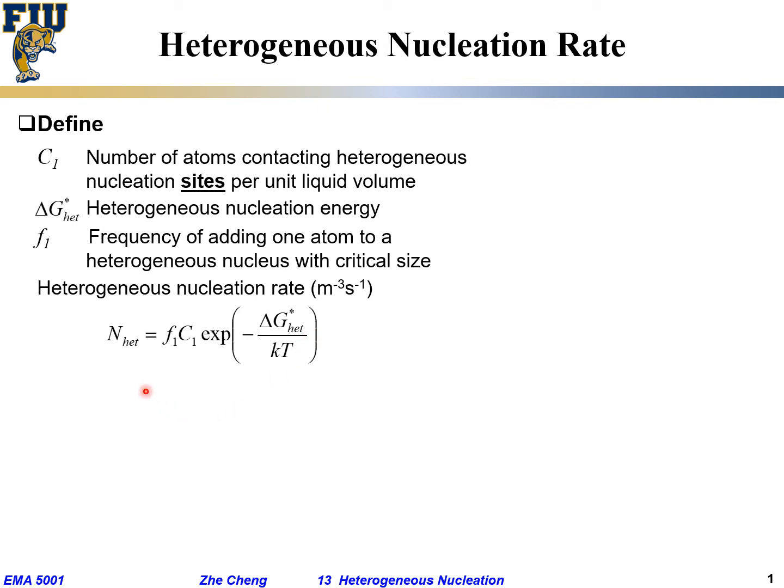Rate is defined as, we need to form a nucleus, heterogeneous nucleus, but the heterogeneous nucleus is only forming at a specific site. That site density is C1, and then it still needs to overcome a barrier of ΔG hetero star, and then we are adding atoms to that. That together gives us the so-called heterogeneous nucleation rate.